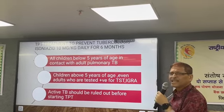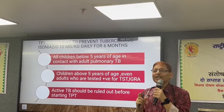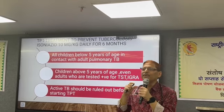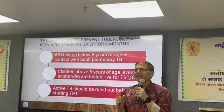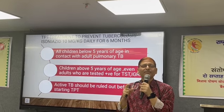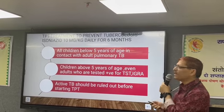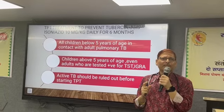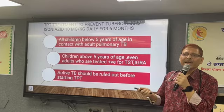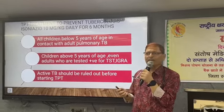For drug-sensitive TB contacts, TPT is isoniazid 10 mg/kg/day for 6 months. If the child is in contact with a drug-resistant TB case and TPT is needed, give levofloxacin 15 mg/kg/day for 6 months. So for DR-TB contacts, we give levofloxacin instead of isoniazid.